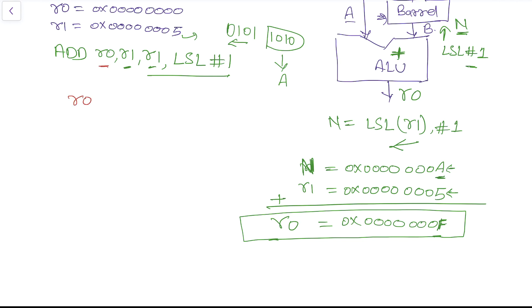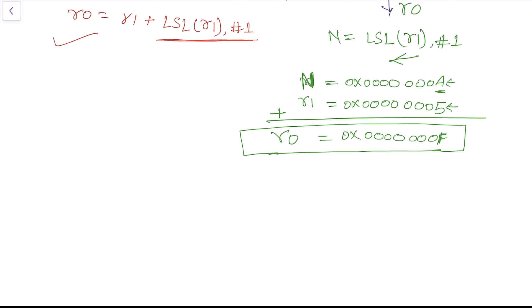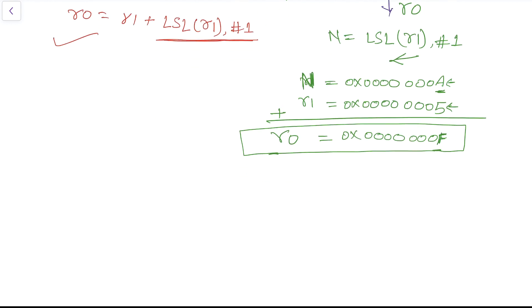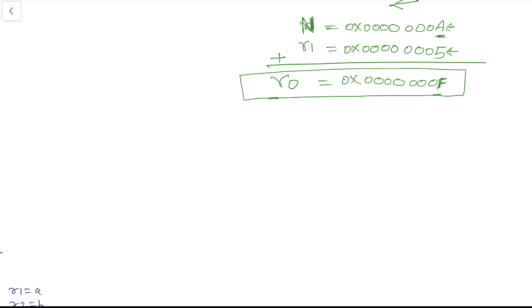So the final result placed into R0 is 0x0000000F. To summarize: R0 equals R1 plus logical shift left of R1 by 1 digit. This was about the barrel shifter. Next we are going to look at our logical instructions.